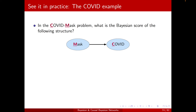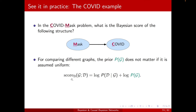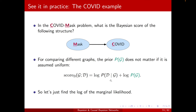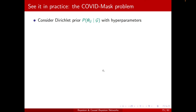Let's calculate the Bayesian score for the Mask-COVID structure. The Bayesian score is the log of the marginal likelihood plus log of p(G). Assuming a uniform prior over structures, the p(G) term doesn't affect comparisons, so we focus on the marginal likelihood. We assume a Dirichlet prior with given hyperparameters and apply the formula.